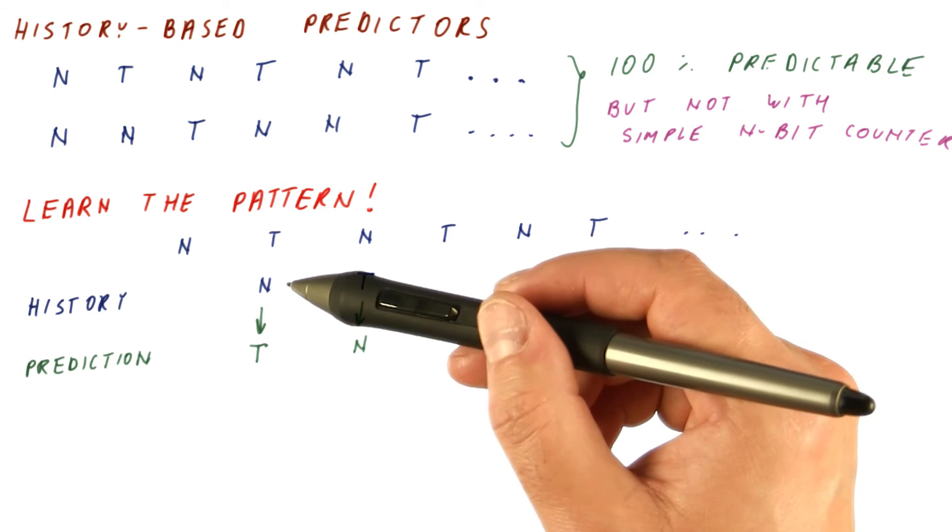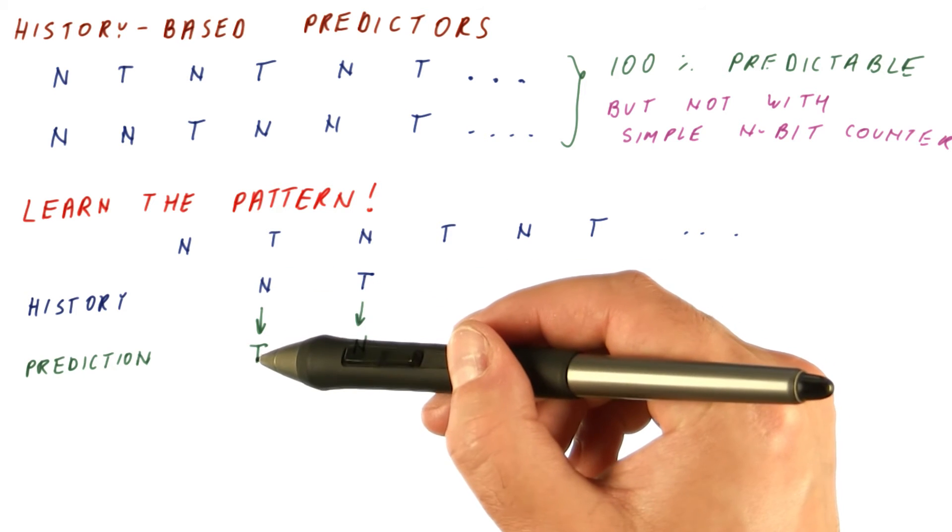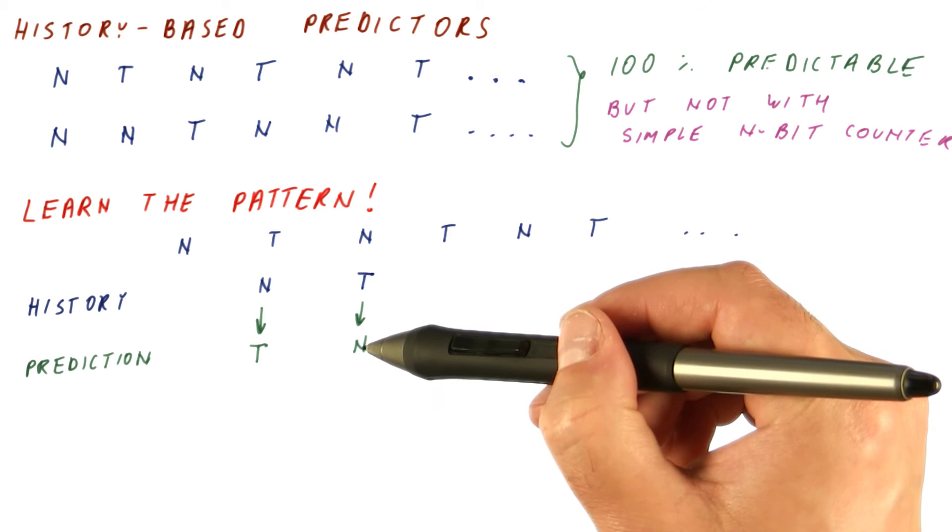So what we need to learn is that under the history of not taken, our decision should be taken. Under the history of taken, our decision should be not taken.